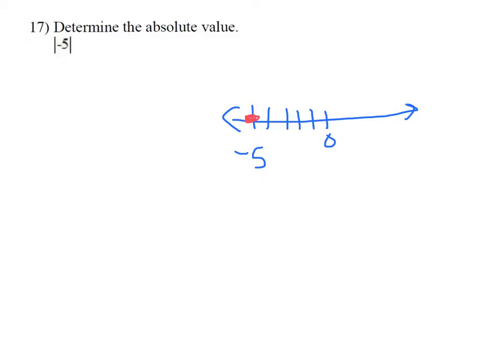Count the spaces: 1, 2, 3, 4, 5. Negative 5 is 5 units from 0. Notice that the absolute value drops the sign.